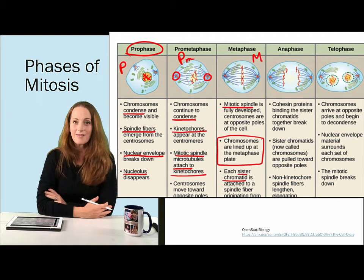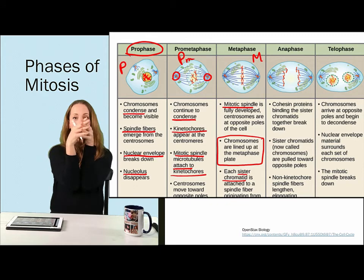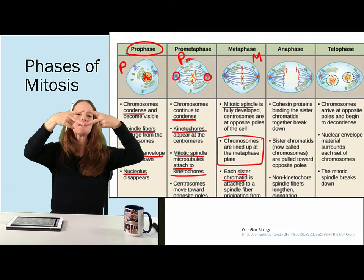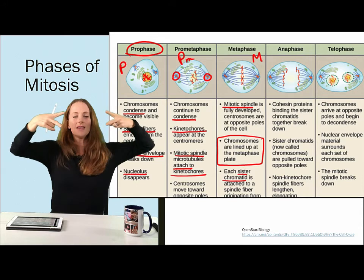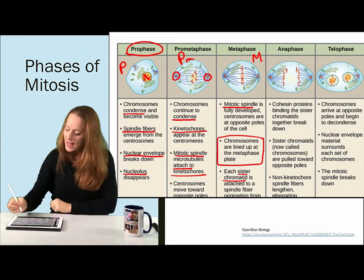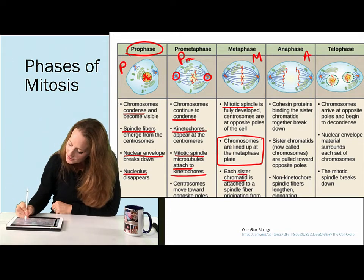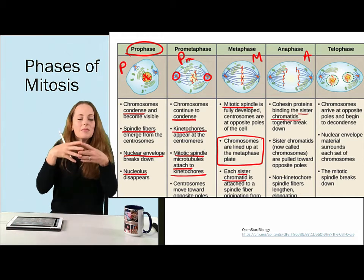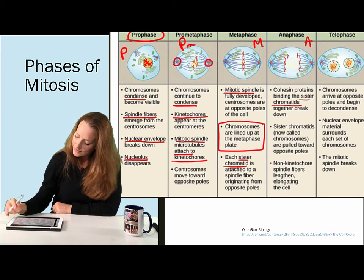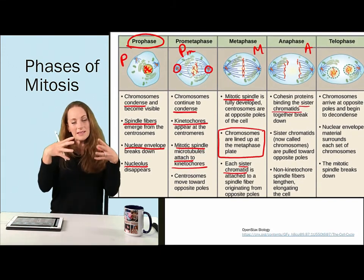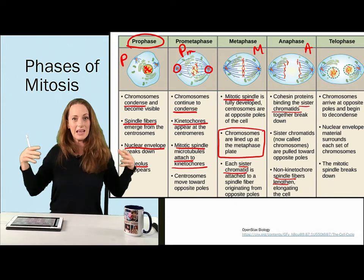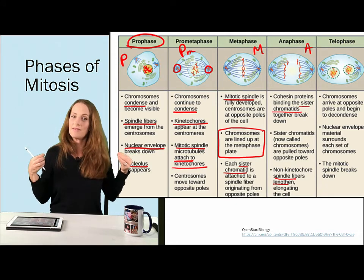Next is anaphase. The chromosomes, after being lined up, kind of split — I think of them as looking like little sideways A's. The sister chromatids each now get pulled to the opposite ends of the cell. The cell, as it's pulling, begins to elongate — the spindle fibers are lengthening and elongating the cell.